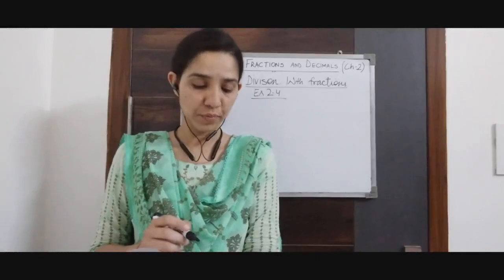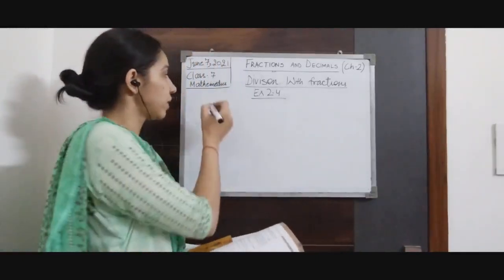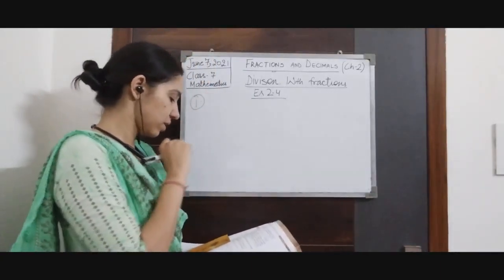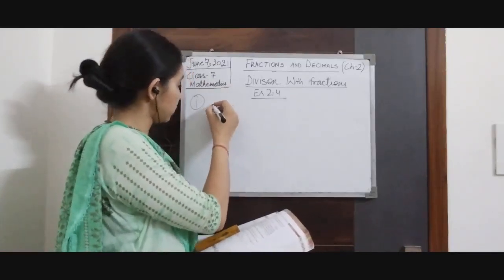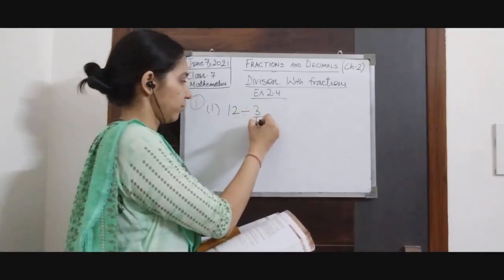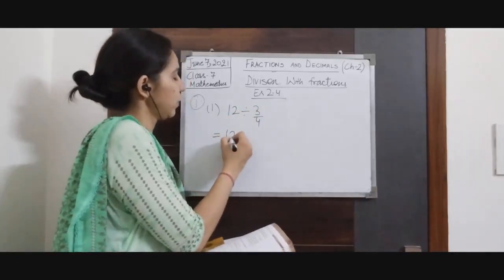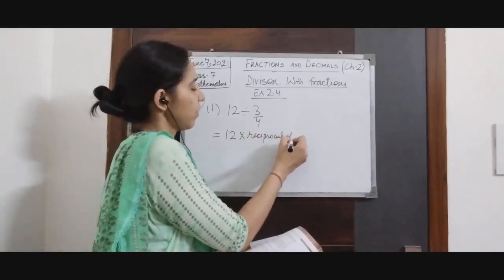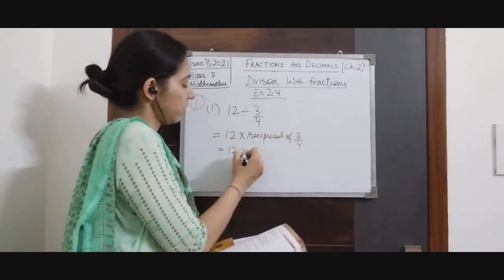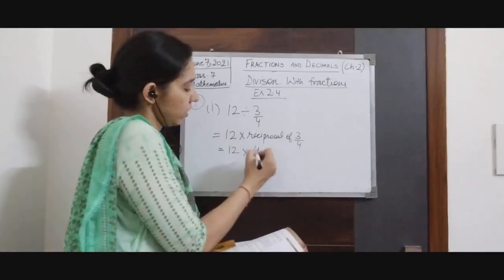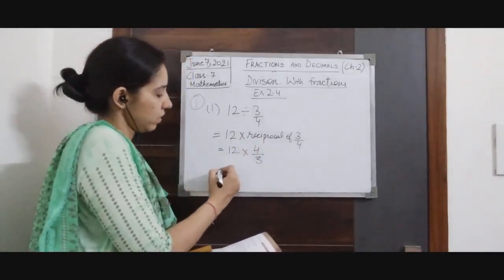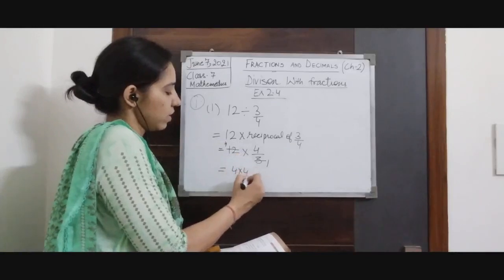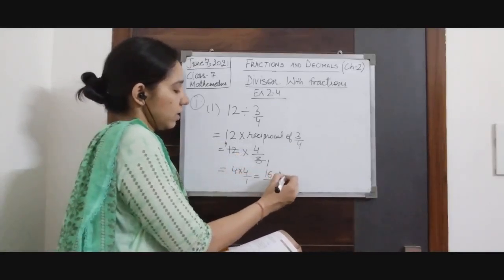Now we will do some questions from exercise 2.4. Question number 1: we have to perform some divisions. First one is 12 divided by 3/4. It means it is equivalent to 12 multiplied by the reciprocal of 3/4. Reciprocal of 3/4 is 4/3 (interchange numerator and denominator). Cancellation: 3 into 12 gives 4. So 4 × 4 / 1 = 16. Our answer is 16.